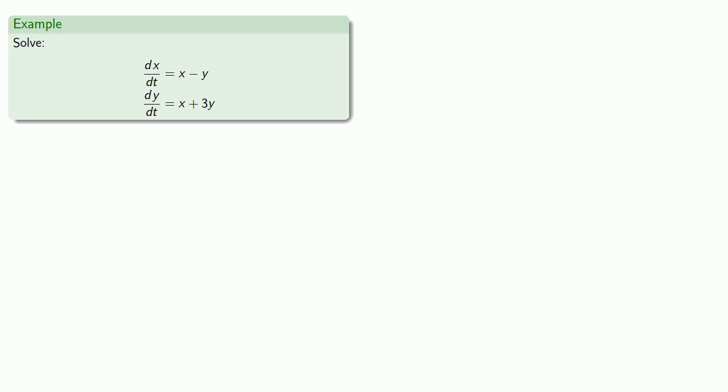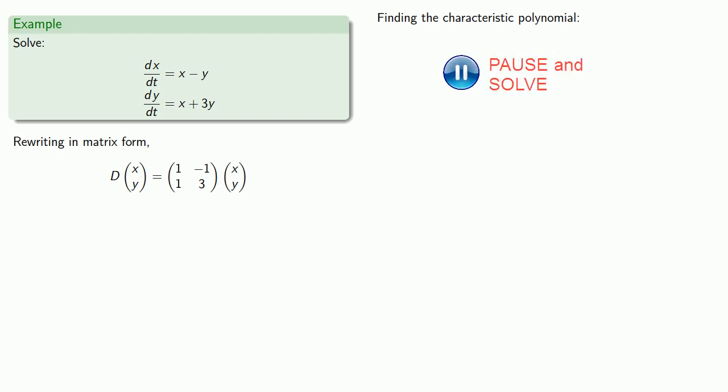So let's consider this system of differential equations. We'll rewrite in matrix form. We'll find the characteristic polynomial. We'll find the eigenvalue.